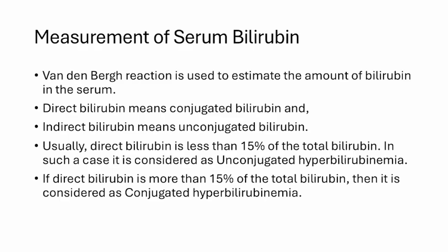Measurement of serum bilirubin is done by the van den Bergh reaction, which tells us whether the bilirubin is direct or indirect. In this reaction, some fraction of bilirubin directly reacts with the reagent, while some requires the addition of alcohol to react. Direct bilirubin reacts directly; indirect bilirubin does not react directly. Importantly, direct bilirubin means conjugated bilirubin and indirect bilirubin means unconjugated bilirubin.